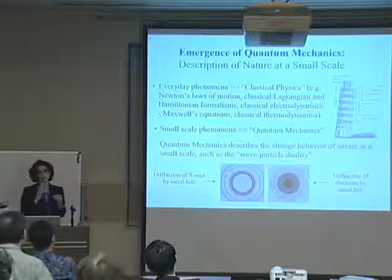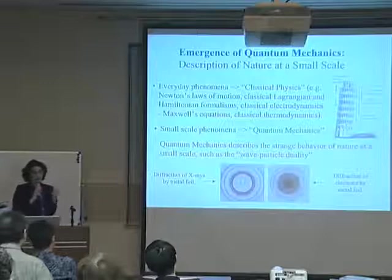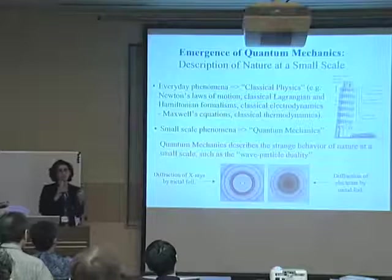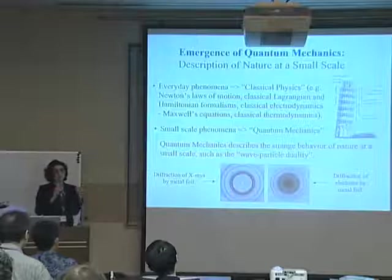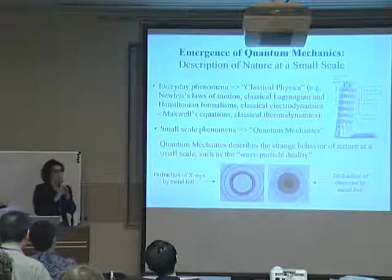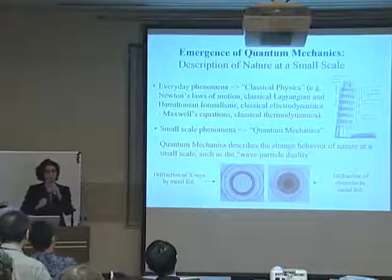The emergence of quantum mechanics. Quantum mechanics emerged as a need to describe the world at a very small scale. For everyday phenomena, we are perfectly well off with classical physics laws — laws of motion and laws of electrodynamics, Maxwell's equations. However, when we look at nature at a very small scale, it behaves very differently. Strange things happen: waves behave like particles, and particles can behave as waves. That's what we call the wave-particle duality.